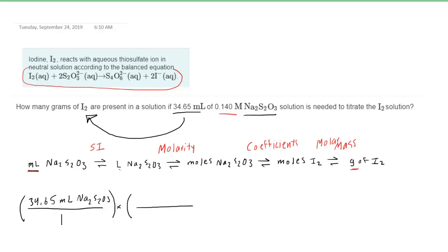Looking at the roadmap, we're going to be converting from milliliters into liters. We all know from our standard unit conversions that 1 milliliter of a substance, which again is the Na2S2O3, will equate to 10 to the negative 3 liters of that same substance.